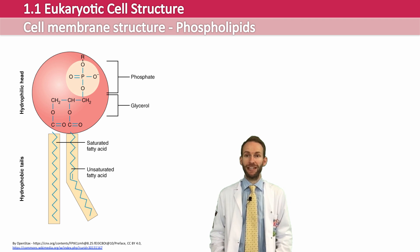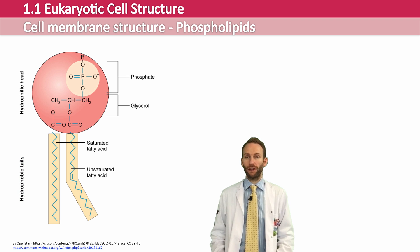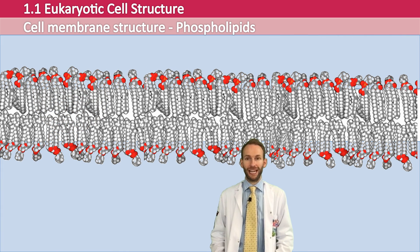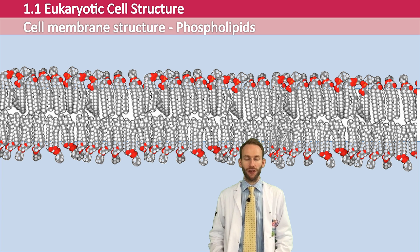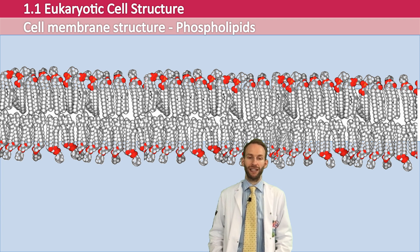Phospholipids are used to make membranes because they have very special properties. The head is attracted to water — it's what we call hydrophilic — but the two tails actually repel water, which is what we call hydrophobic. If you place some phospholipids in water, they will naturally arrange themselves so that both parts of the molecule are happy. The heads will go towards the water and the tails will go away from the water, forming what we call a bilayer, where the tails point inward and the heads are on the outside.